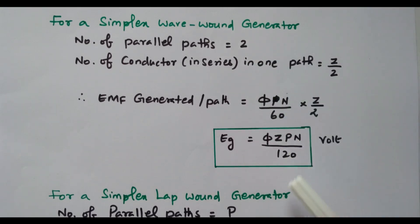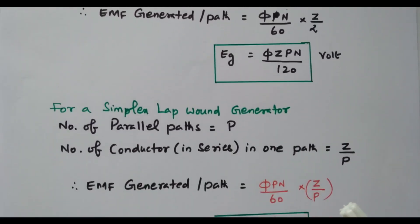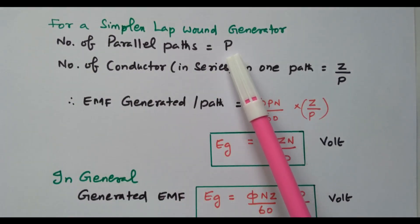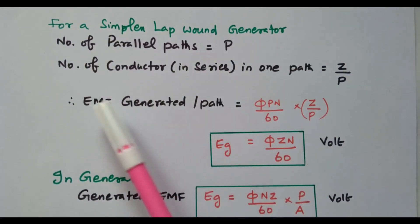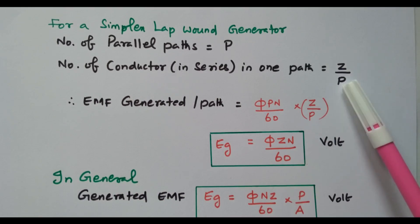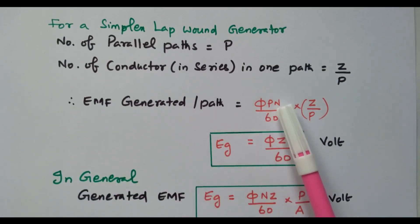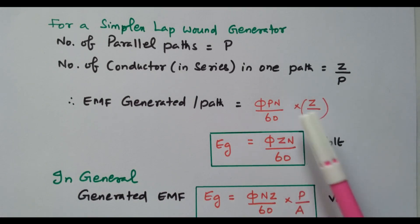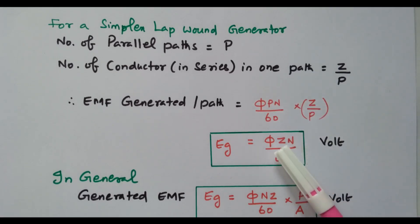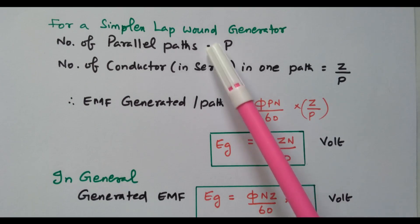Now for lap winding: the number of parallel paths equals the number of poles P. So the number of conductors in series in one path is Z/P. The EMF generated per path is φPN/60 × Z/P. The P terms cancel, giving φZN/60 volts. This expression is applicable for lap winding.